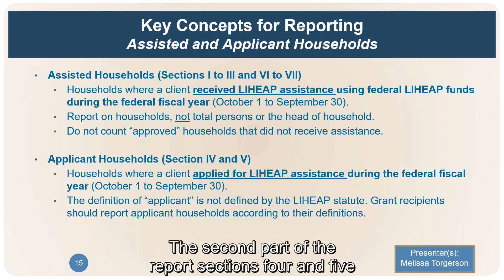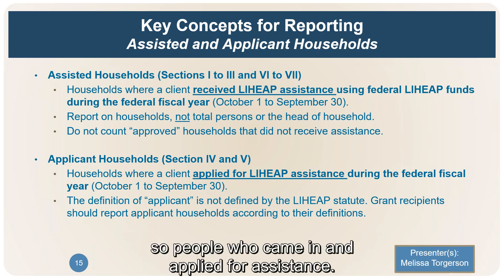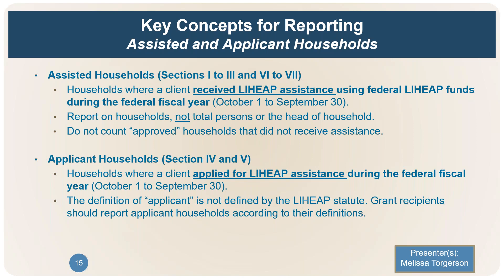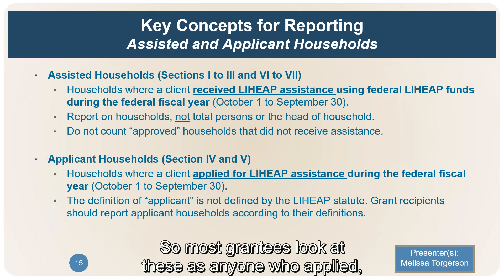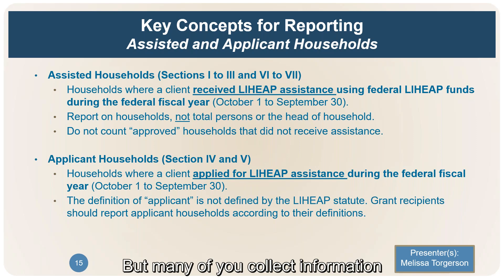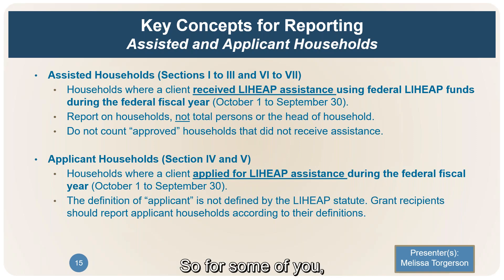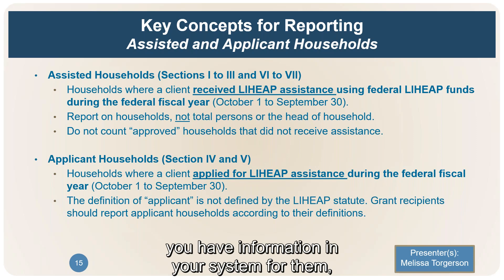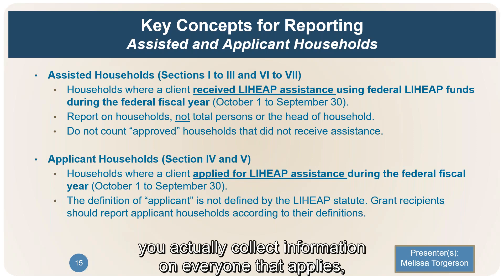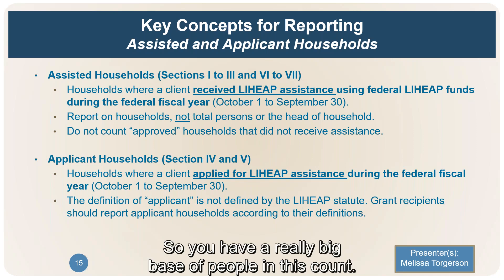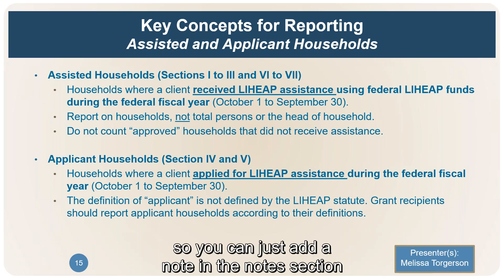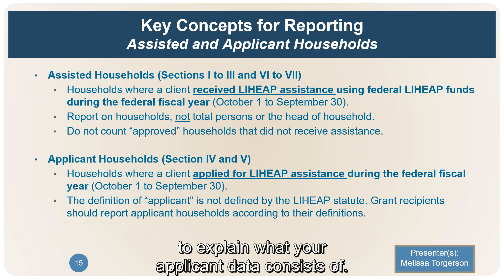Sections four and five look at applicants — people who came and applied for assistance. There isn't a solid definition at the federal level; it's left to grantees to define. Most grantees count anyone who applied whether they got assistance or not. For some, this means adding households that were denied or voided. For others, you collect information on everyone who applies, giving a very large base. You can add a note in the notes section to explain what your applicant data consists of.